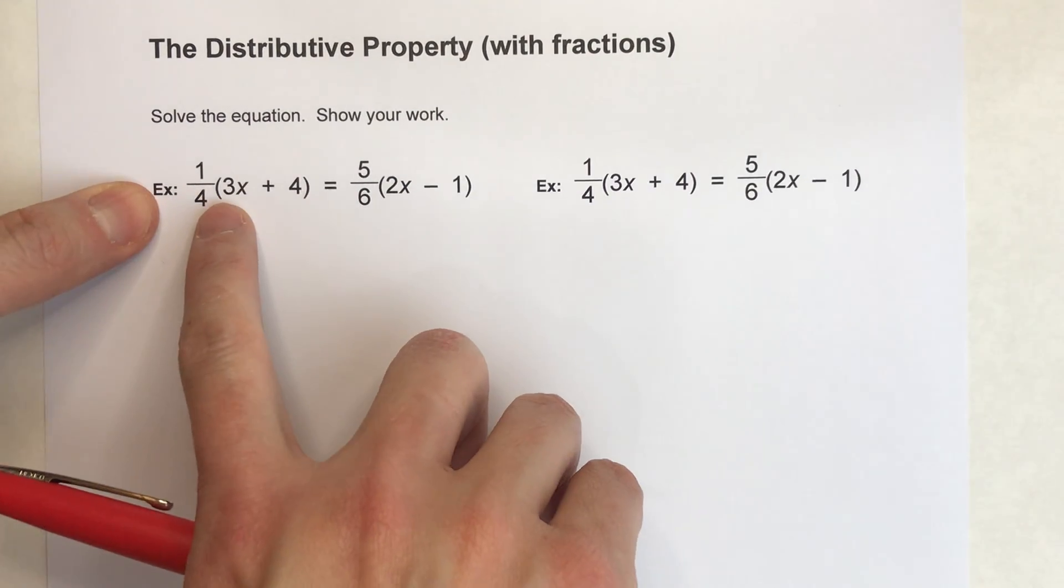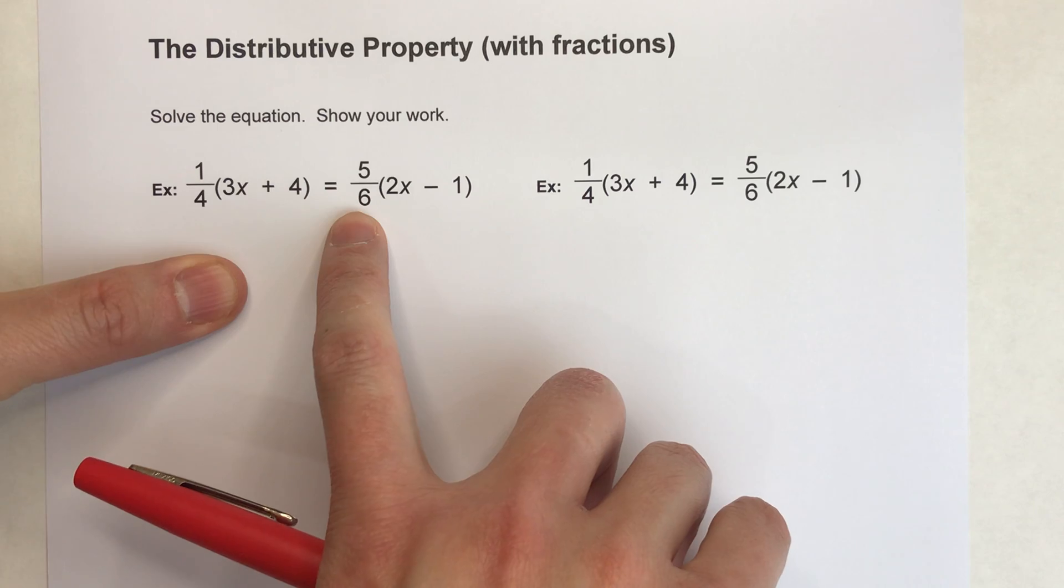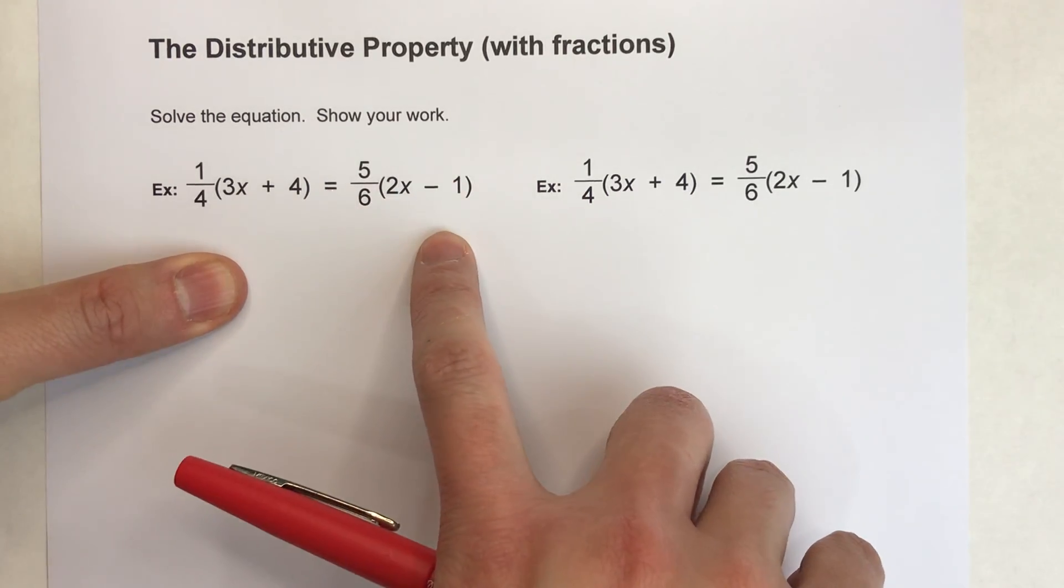Alright, so we've got 1/4 times, in parentheses, 3x plus 4, equals 5/6 times, in parentheses, 2x minus 1.